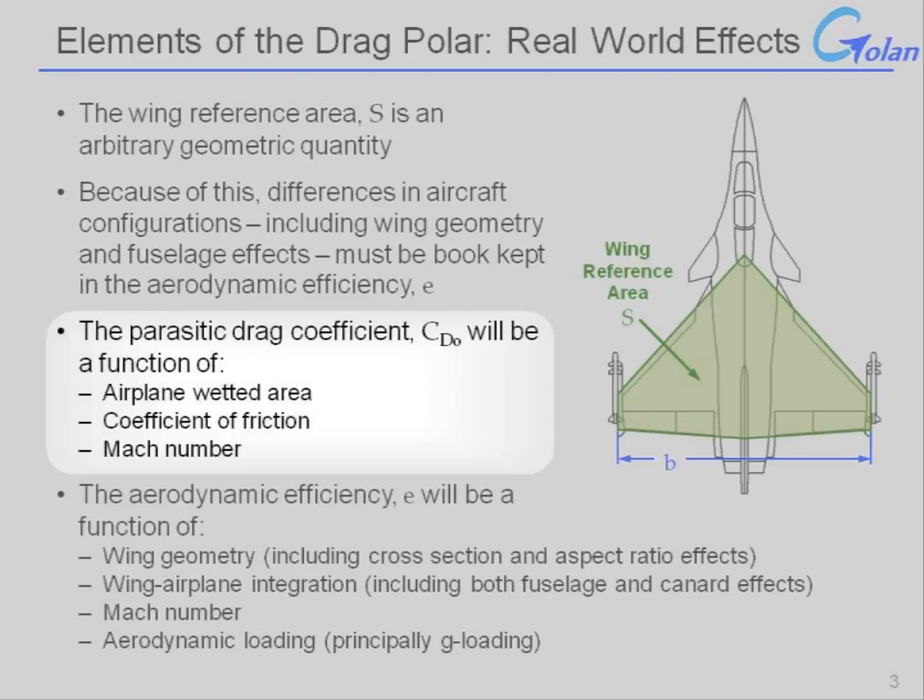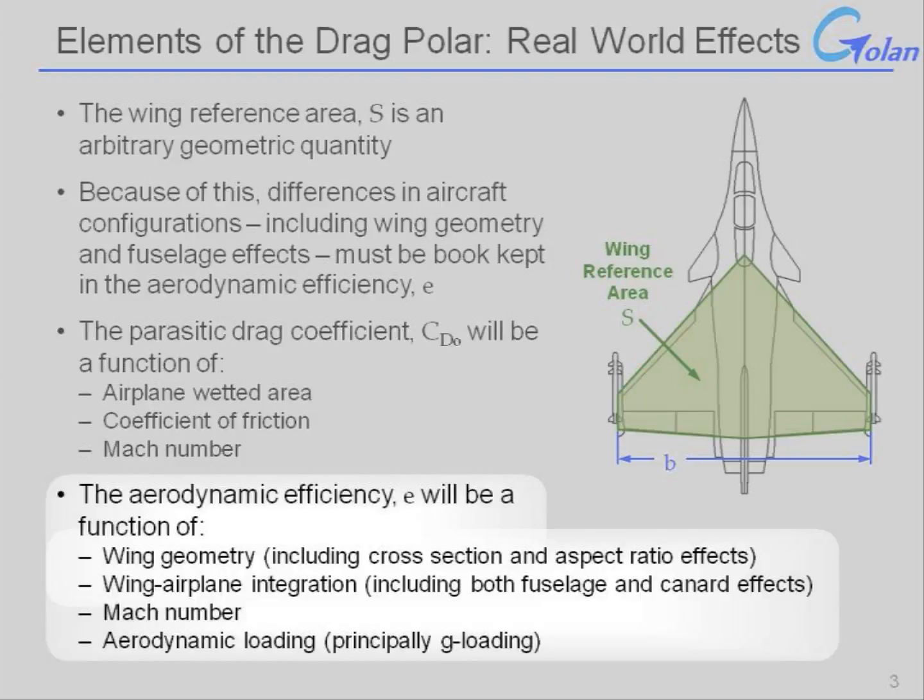The parasitic drag coefficient will be a function of the airplane wetted area and the coefficient of friction, including things like whether or not you have a lot of rivets popping out of the skin, as well as Mach number effects, such as transonic drag rise. The aerodynamic efficiency is going to be a function of the wing geometry, including the cross-section and aspect ratio effects, as well as wing fuselage integration. It also will be a function of the Mach number and will change with aerodynamic loading, or g-loading.